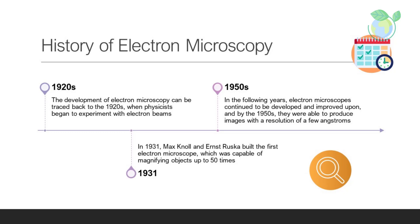In the following years, electron microscopes continued to be developed and improved upon, and by the 1950s, they were able to produce images with a resolution of a few angstroms — 1 angstrom equals 0.1 nanometers.